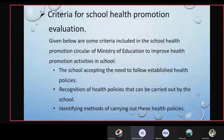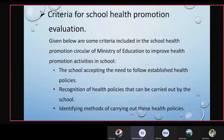Next are the criteria for school health promotion evaluation. Given below are some criteria included in the school health promotion circular of the Ministry of Education to improve health promotion activities in school. These include: the school accepting the need to follow established health policies; recognition of health policies that can be carried out by the school; and identifying methods of carrying out these health policies — for example, treating a health policy as a specific problem to address.